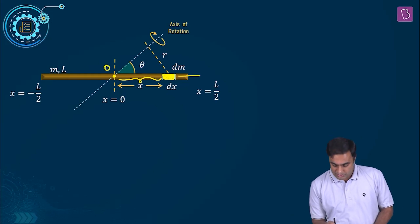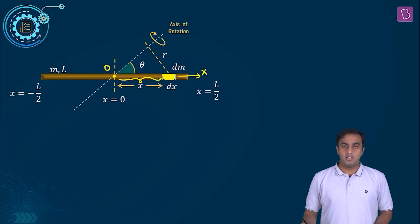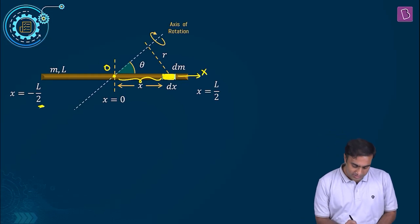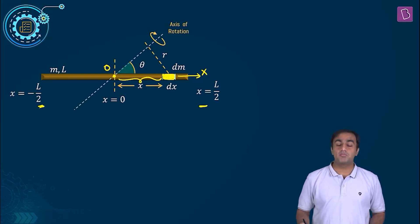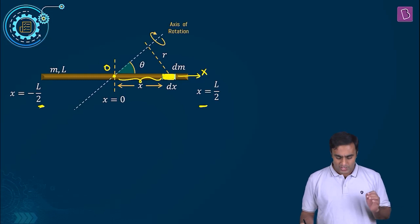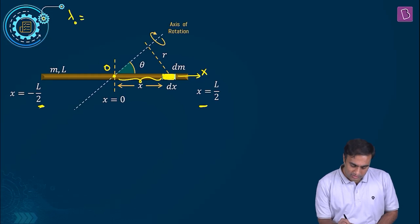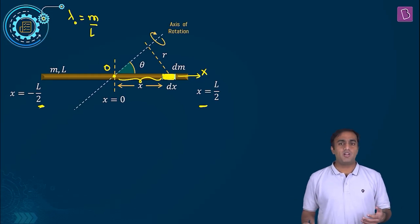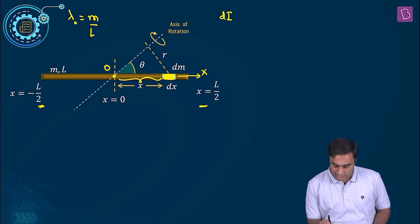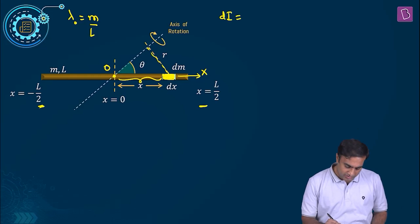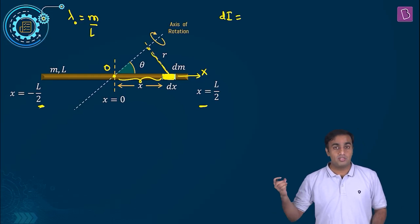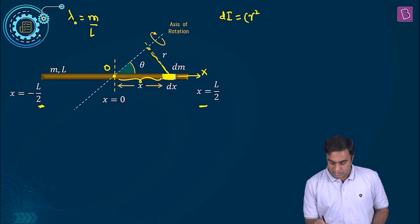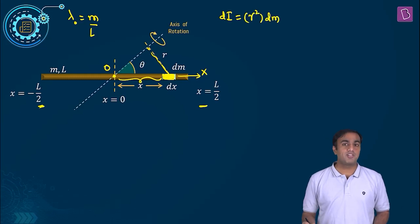If we choose this to be the x axis, then the rod lies from x equal to minus L by 2 till x equal to plus L by 2. We are given that the mass per unit length of this rod is a constant. If we call that to be lambda naught, then it is m by L. How do you find the moment of inertia of this differential element about the given axis of rotation? You write it as dI equals the perpendicular distance from the axis of rotation to the differential element, squared, into dm, the mass of the differential element.